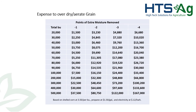Let's talk about what it costs to over-dry the bottom of the bin. This is figured at $3.50 corn, $1.50 per gallon propane, and $0.12 per kilowatt hour for electricity — those rates may vary, but this gives a general idea. If you have $150,000 in storage and you over-dry the bottom third of all those bins by two to three moisture points, looking at the 50,000-bushel line, you could be looking at $8,000 to $12,000 in losses from over-drying the bottom of the bin.